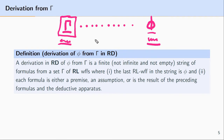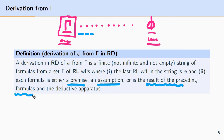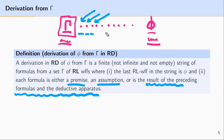The final constraint on this series is that each one of these well-formed formulas between gamma and phi is either a premise, an assumption, or is the result of preceding formulas and the deductive apparatus. That is, each one of these formulas in the sequence from gamma to phi is justified by our deductive apparatus.